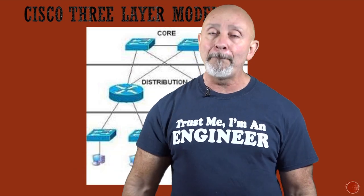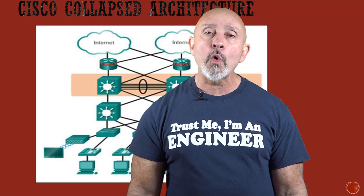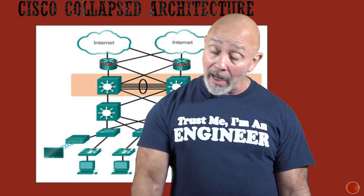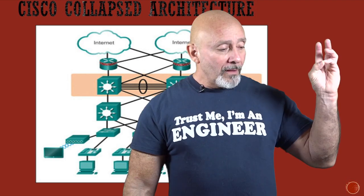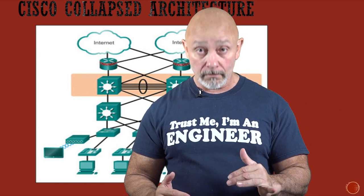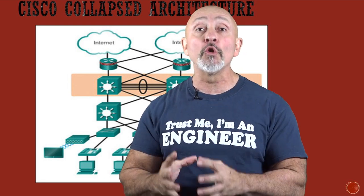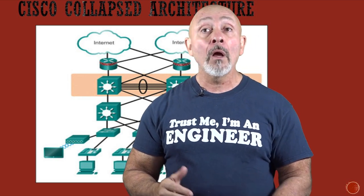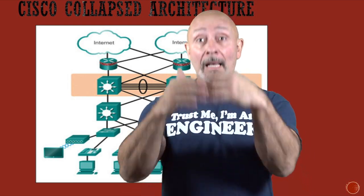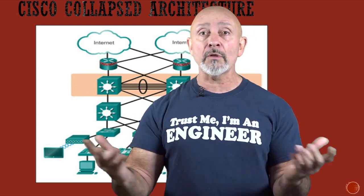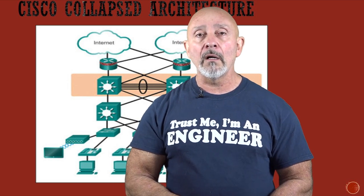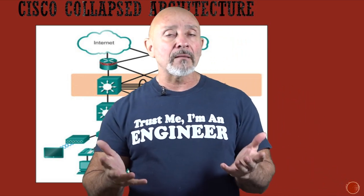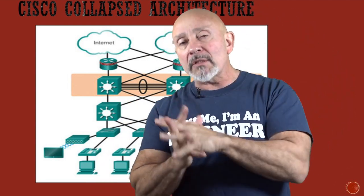This model has been around forever, but it had a facelift — it's called the collapsed core architecture. The core and distribution layers are combined as a single layer, meaning the services they perform are merged. The reason? Cost. You can use a layer 3 switch to do multiple things — routing in the core and inter-VLAN routing in the distribution layer — all in one device.